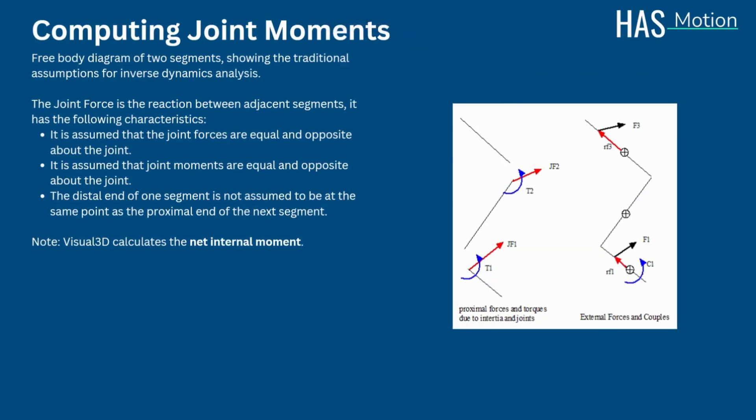Now that we have computed the required joint angles, we can move on to computing the joint moments. In the diagram shown is a free body diagram of two segments, showing the traditional assumptions for inverse dynamics analysis. The joint force is the reaction force between adjacent segments, and it has the following characteristics. It is assumed that joint forces and joint moments are equal and opposite about the joint, and the distal end of one segment is not assumed to be at the same point as the proximal end of the next. A note is that Visual 3D calculates the net internal moment.